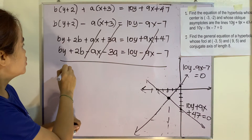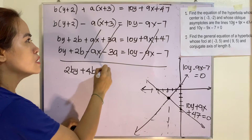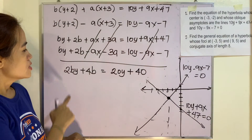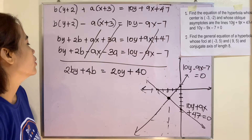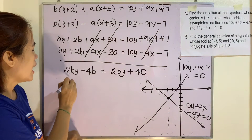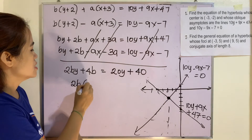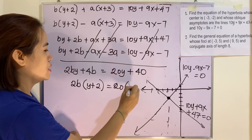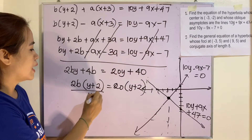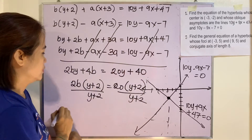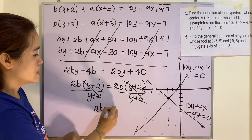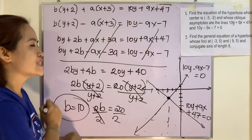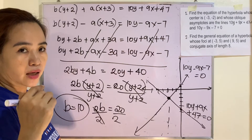After adding the two equations: 2b(y) plus 4b equals 20y plus 40. To isolate b, we factor to get 2b(y plus 2) equals 20(y plus 2), so 2b equals 20. Dividing both sides by 2, our b equals 10.